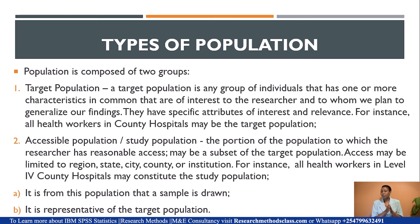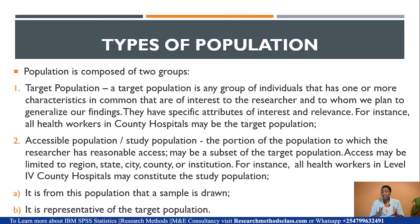We have two key types of population in Section 3.4: target and accessible population. Target population are those individuals who have the characteristics of interest to the researcher and to whom you wish to generalize your findings. They have the specific attributes of interest and they are relevant to you. The population is what the researcher wishes to study, but they look at which members are most relevant and have the specific attributes they want to study — and this forms the target population.